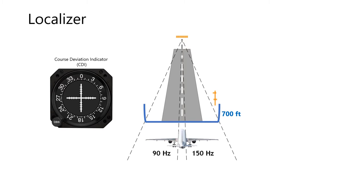At threshold, full-scale deflection of the CDI should occur at 350 feet either side of runway centerline, for a total width of 700 feet. This is known as the tailored course width, since the localizer width, in degrees, is dependent upon runway length.